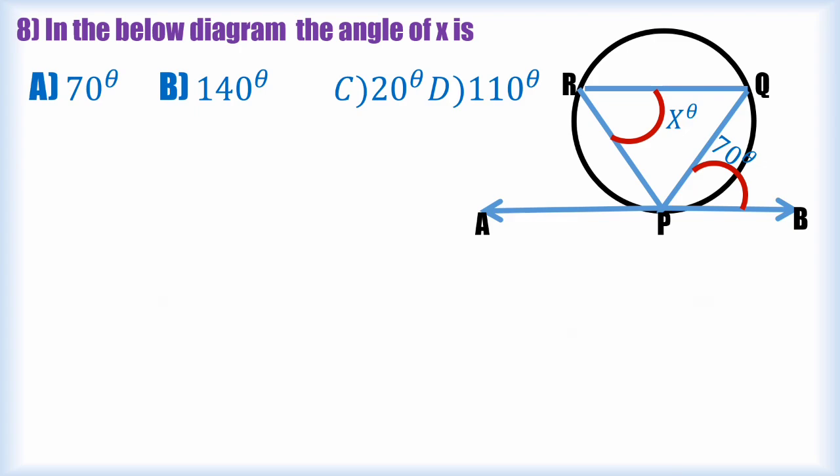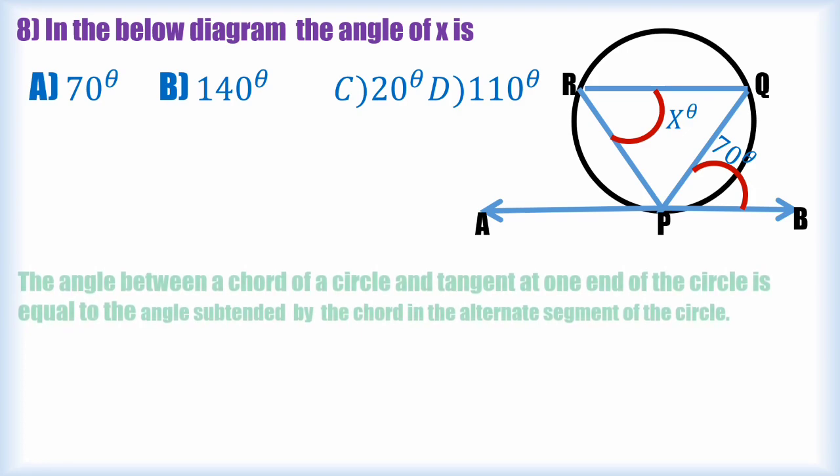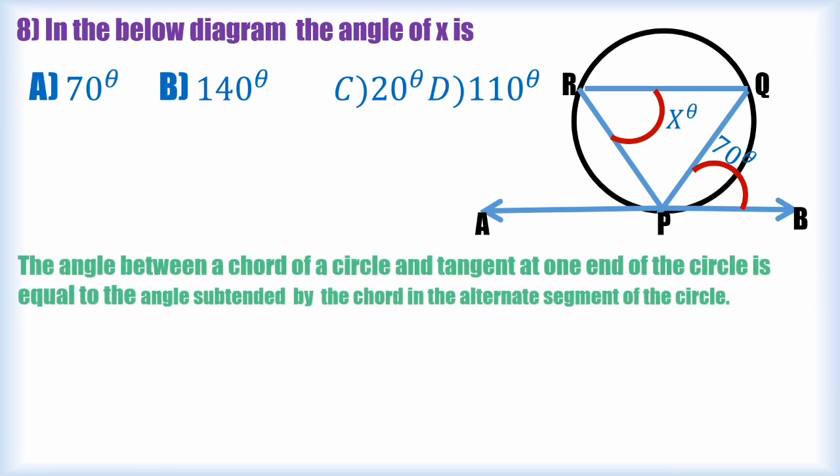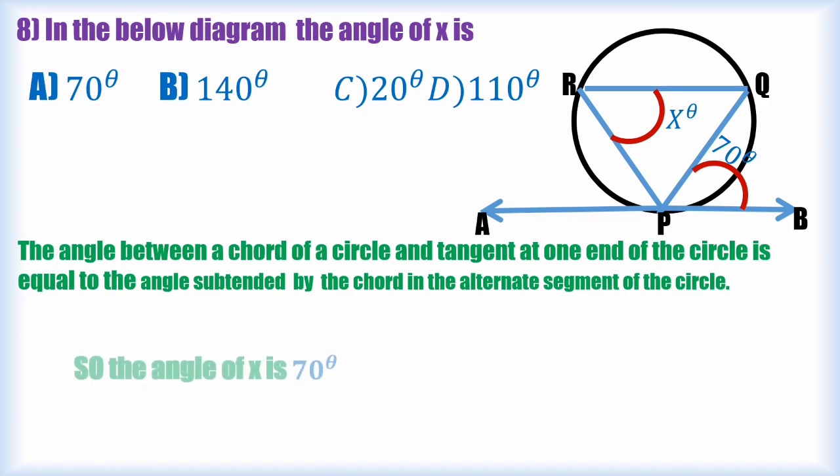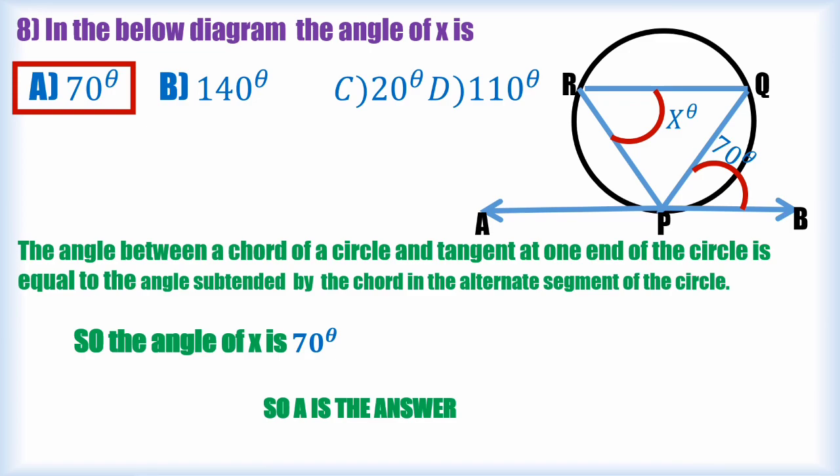Then the angle BPQ is 70 degrees. Through the alternate segment theorem the angle of QRP is also 70 degrees. Because the angle between the chord of a circle and the tangent at the one end of the circle is equal to the angle subtended to the chord and the alternate segment of the circle. So the angle of X is 70 degrees. So A is the answer.